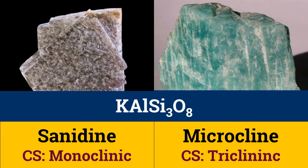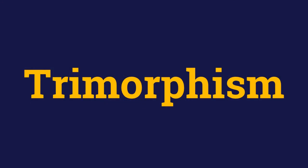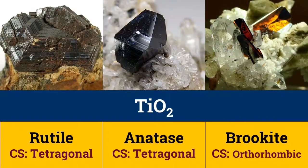Sanidine is the higher temperature variety, which is quickly cooled from the high temperature of eruption. Similarly, when a mineral shows three distinct structures, the phenomenon is called trimorphism.